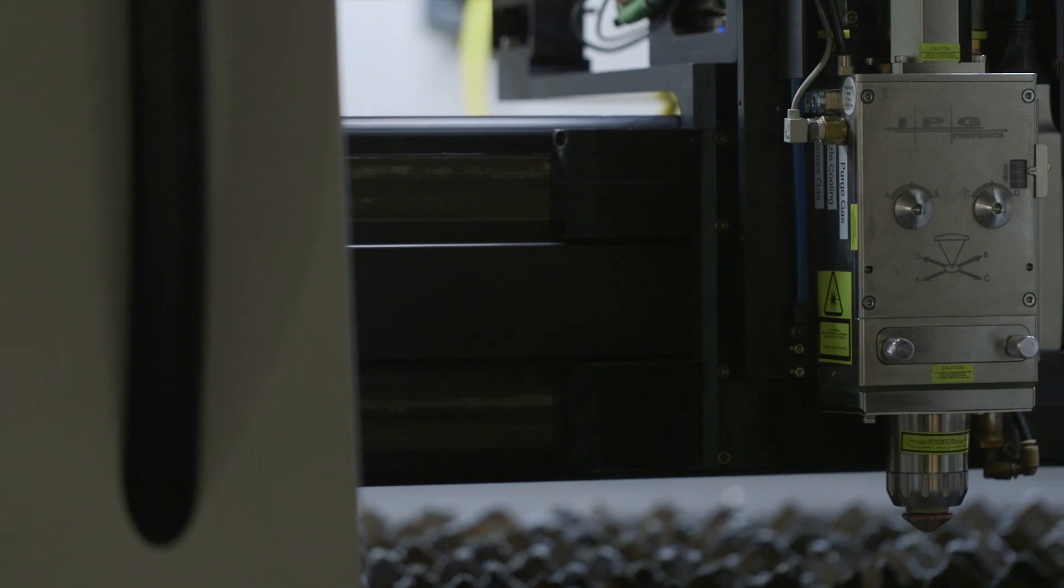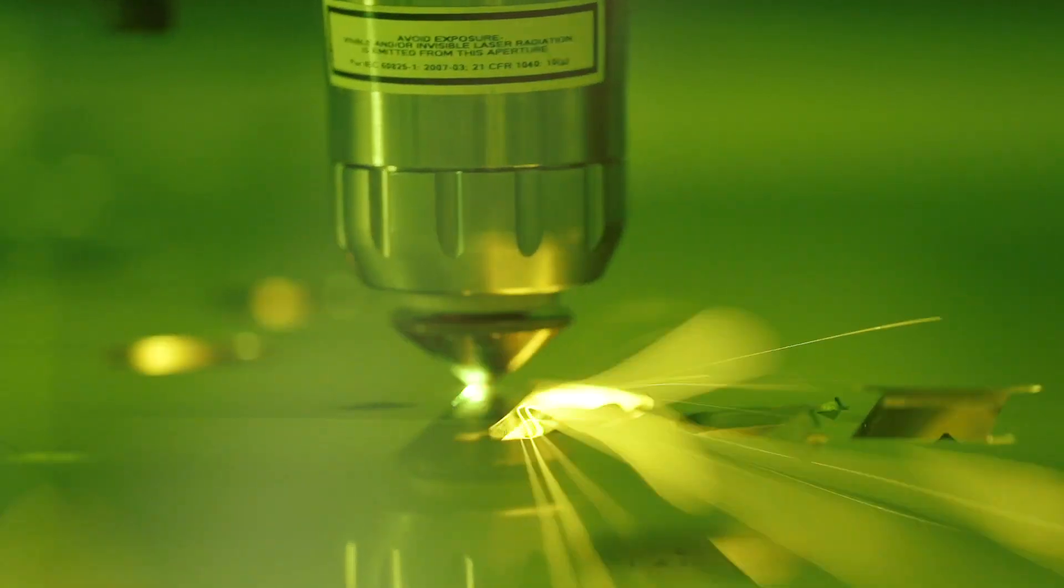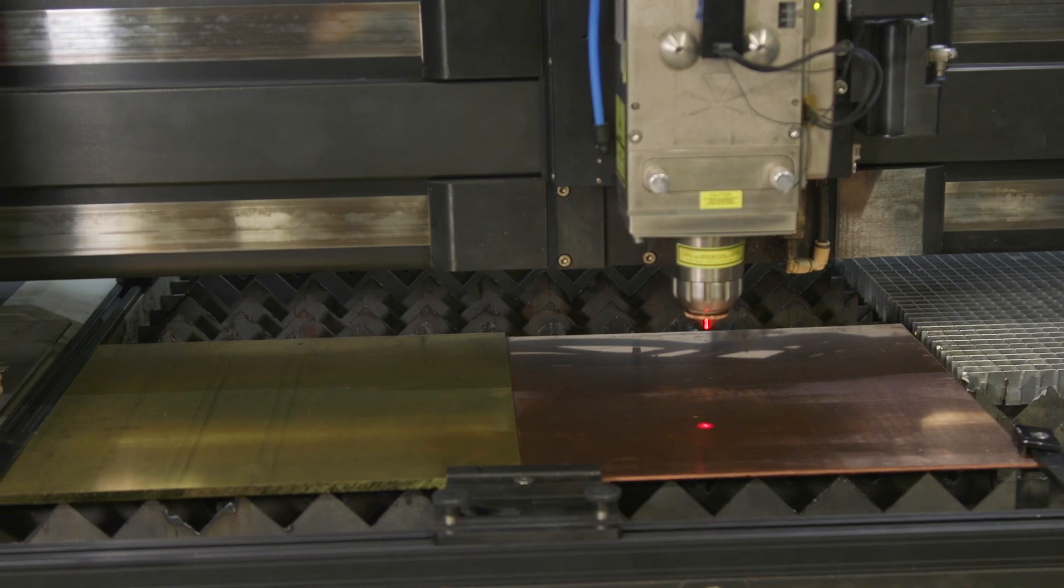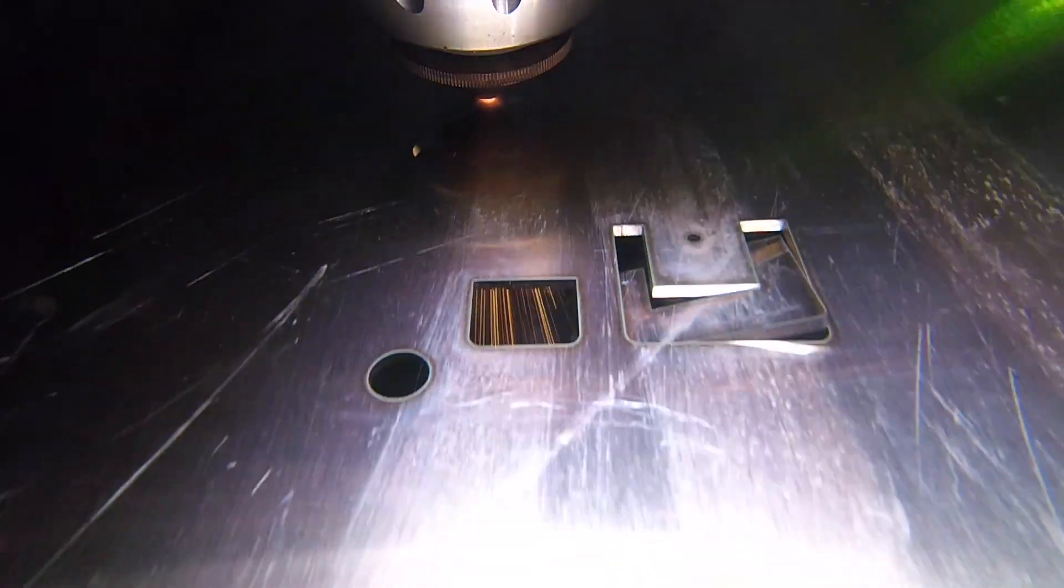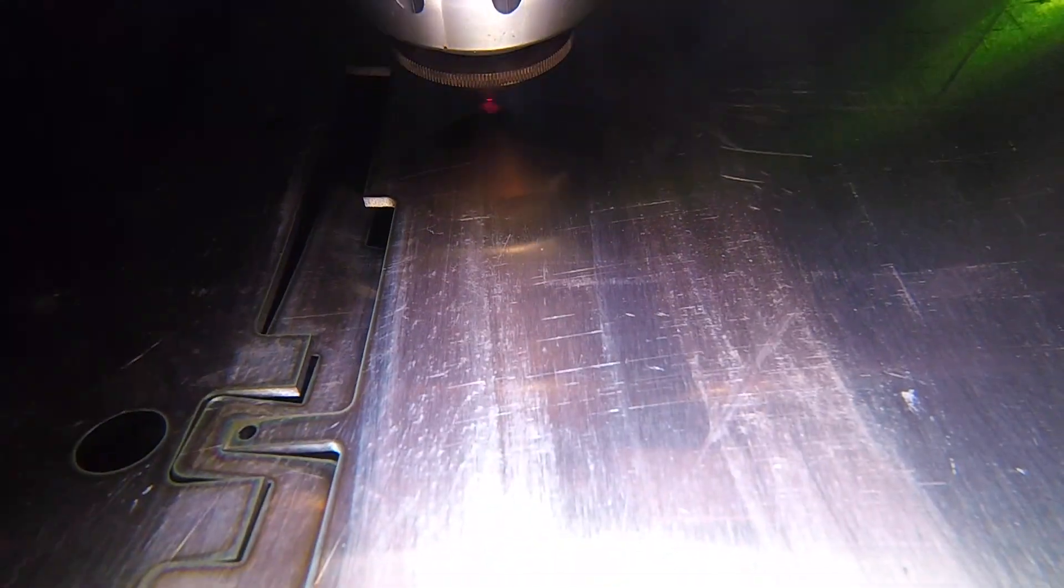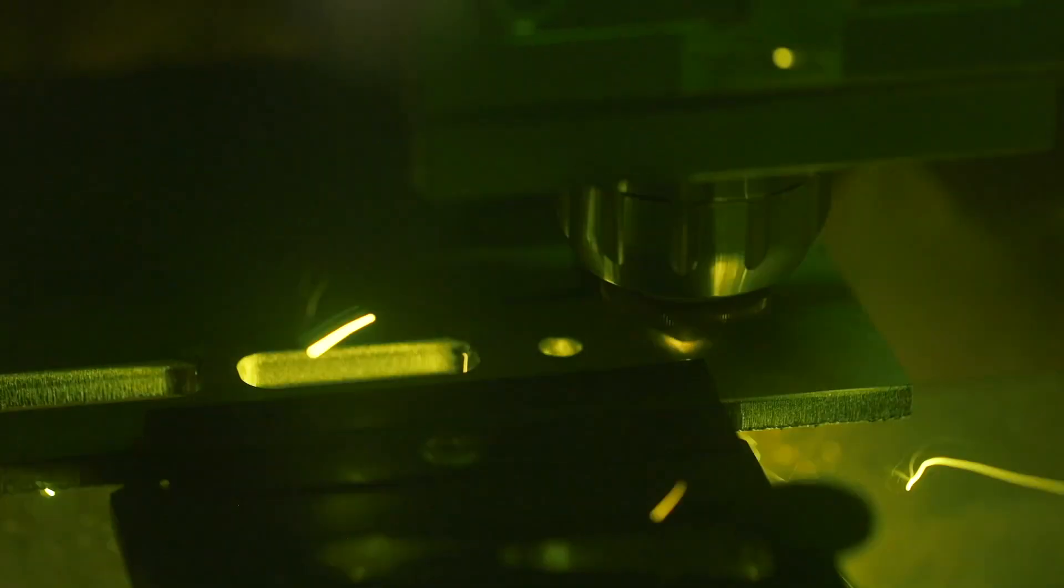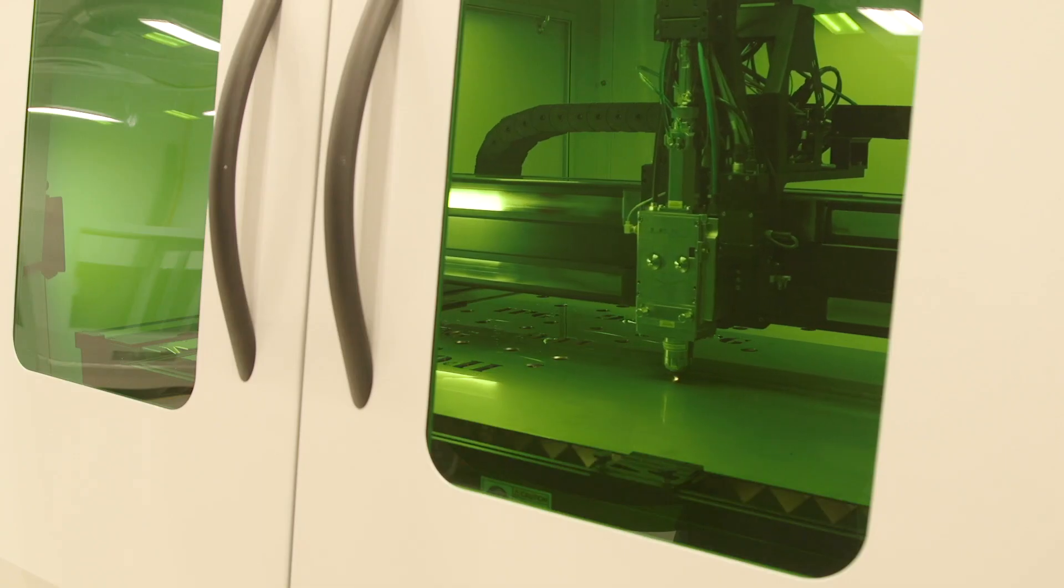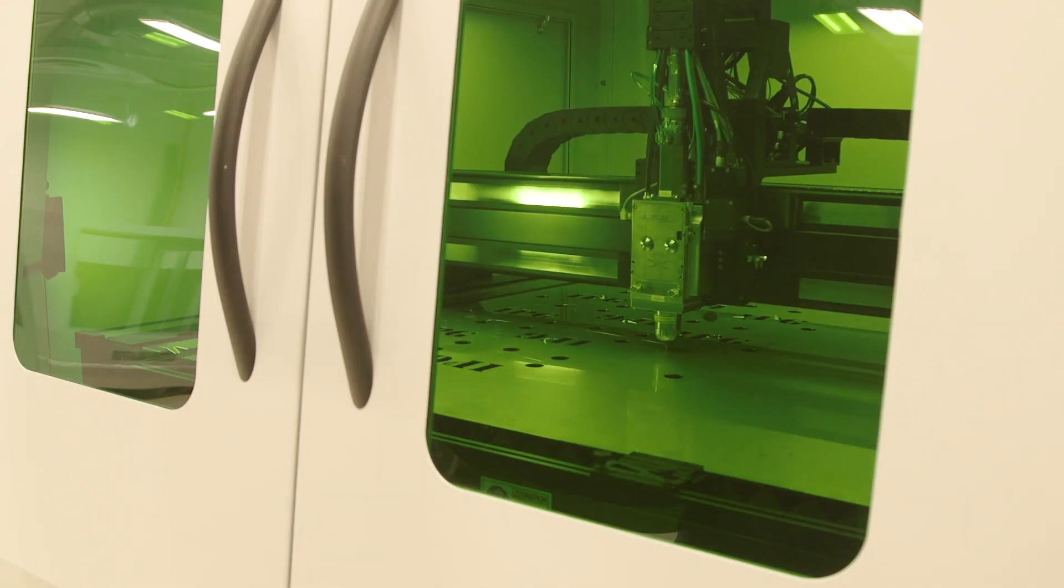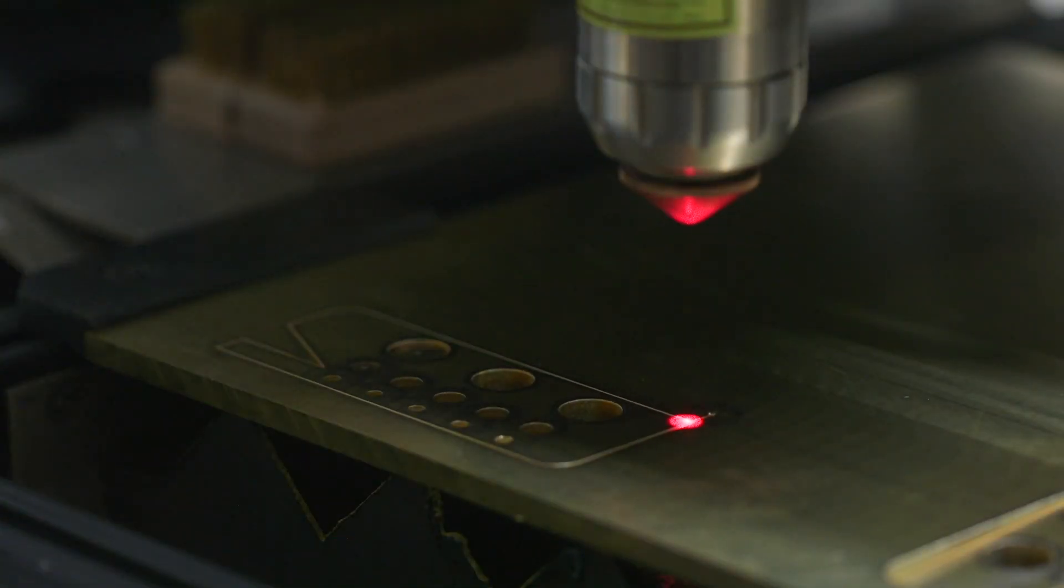Fiber lasers create really high power density on the surface of these reflective metals. The high power density causes rapid melting of the surface of these materials and therefore the process can quickly overcome the reflectivity barriers and start a stable cutting process.